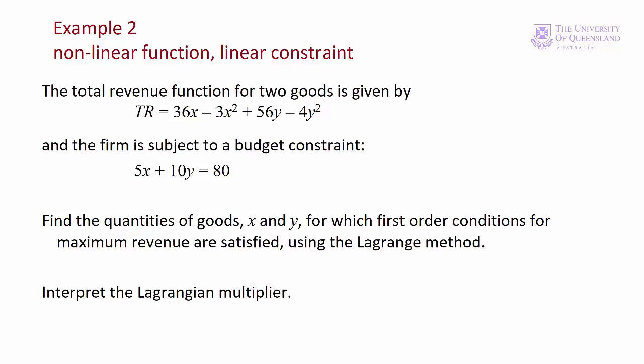In example two, a firm produces two goods, x and y, and has this total revenue function. The first two terms of the revenue function relate to the revenue from x — that would be the price of x times the quantity of x. The second two terms relate to the revenue from y — that would be the price of y times the quantity of y. There's also a budget constraint; for example, the number of hours of labour available may be limited to 80 hours. It would take five hours to produce one unit of x and 10 hours to produce one unit of y. The firm will want to maximise total revenue.